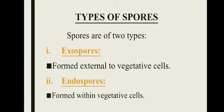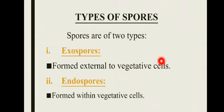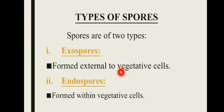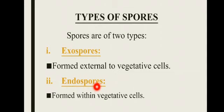Spores دو طرح سے produce ہو سکتے ہیں۔ Vegetative cells وہ ہوتے ہیں جو normal growing cells ہوتے ہیں۔ اگر spores vegetative cells کے باہر produce ہوں تو انہیں exospores کہتے ہیں۔ Exospore میں vegetative cell کے باہر bud بنتا ہے اور اس bud میں spores produce ہوتے ہیں۔ اگر vegetative cells کے اندر کی طرف spores produce ہوں تو انہیں endospores کہتے ہیں۔ Endospore اپنی ایک wall بنا لیتے ہیں جو bacteria کو unfavorable conditions سے بچاتی ہے۔